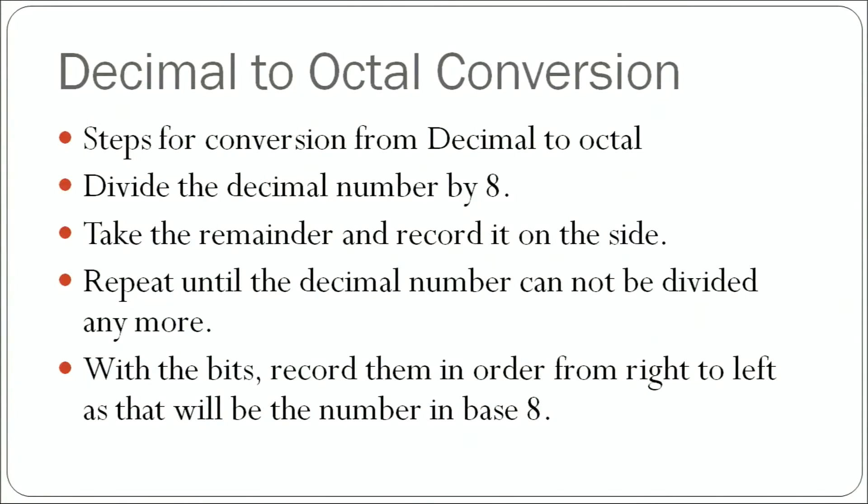Next we will see decimal to octal conversion. The conversion is again the same, except instead of dividing by 2 we divide by 8, because we are trying to get the octal number. Steps are: divide the decimal number by 8, take the remainder and record it on the side, repeat until the decimal number cannot be divided anymore, then record the remainders from right to left to get the number in base 8.